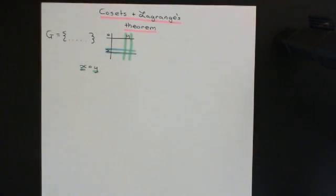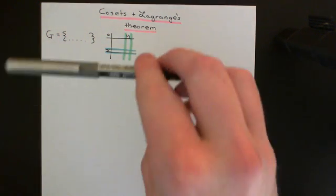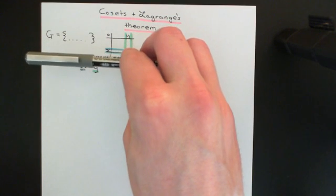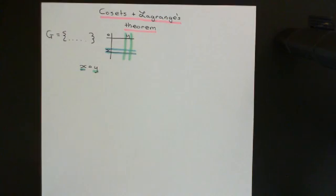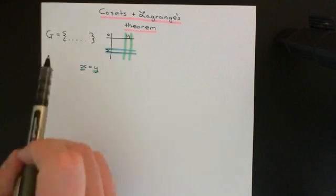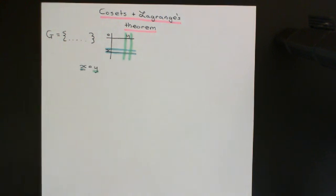For all possible compositions you'll have an entry in this composition table which will tell you what the answer to that composition actually is. The really important property of the composition table of groups I want to remind you of is that all the rows and all the columns of the composition table actually contain every element of the group once and only once.